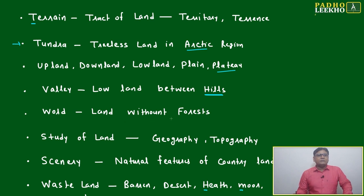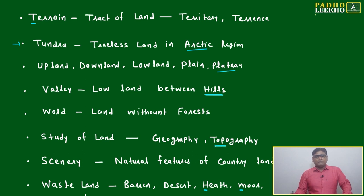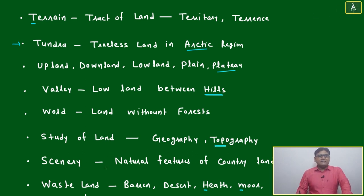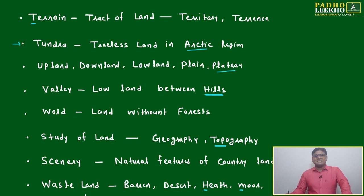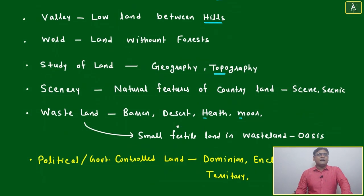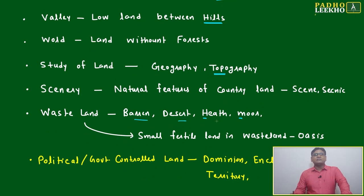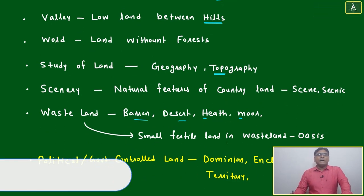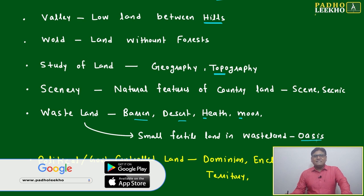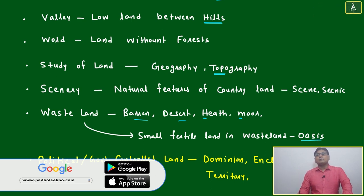Land without forest is another category. Geography and topography are both related to the study of land — scenery and natural features of a country. Wasteland, barren desert, heave or moor are major categories. Oasis is a small fertile land within wasteland. Sometimes we use that word, but these four land types — wasteland, desert, barren, and oasis — are closely related.